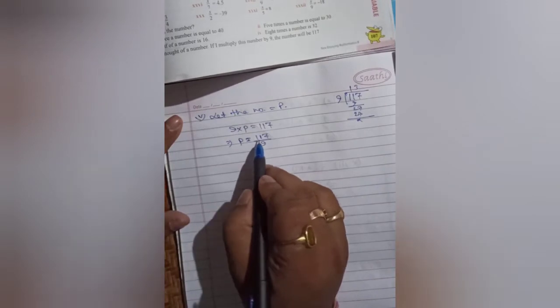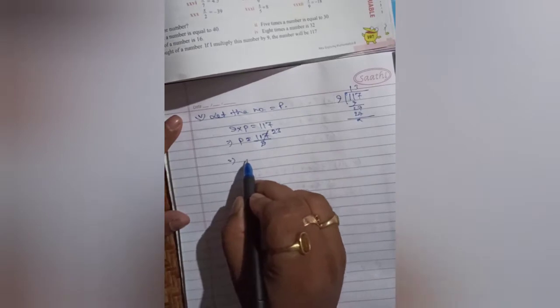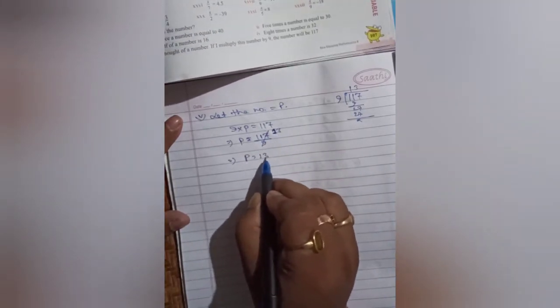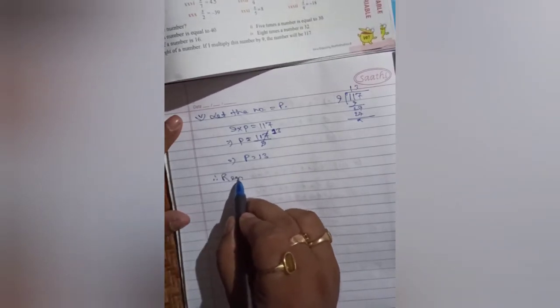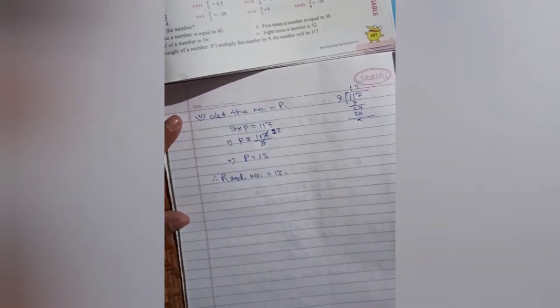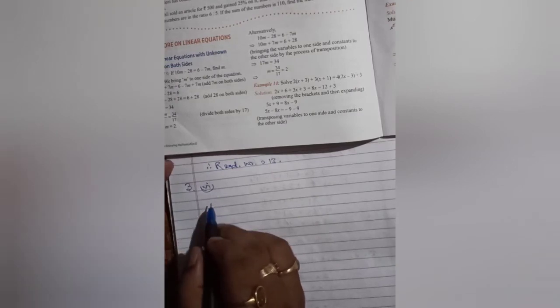So p is equal to 117 by 9. On dividing will get 13. So p is equal to 13. Therefore, required number is equal to 13.